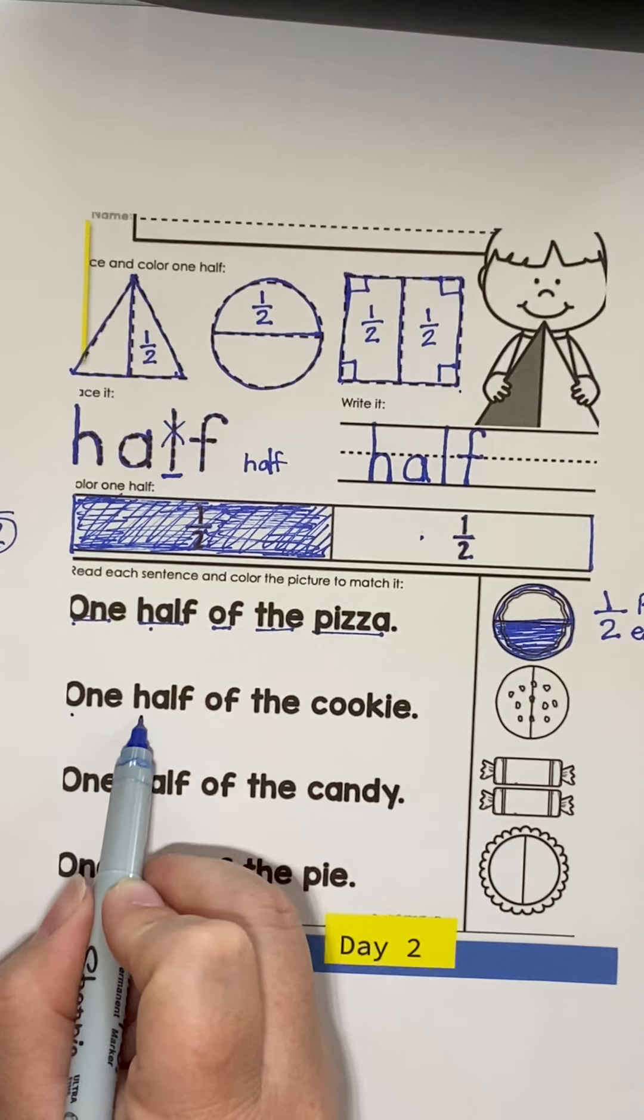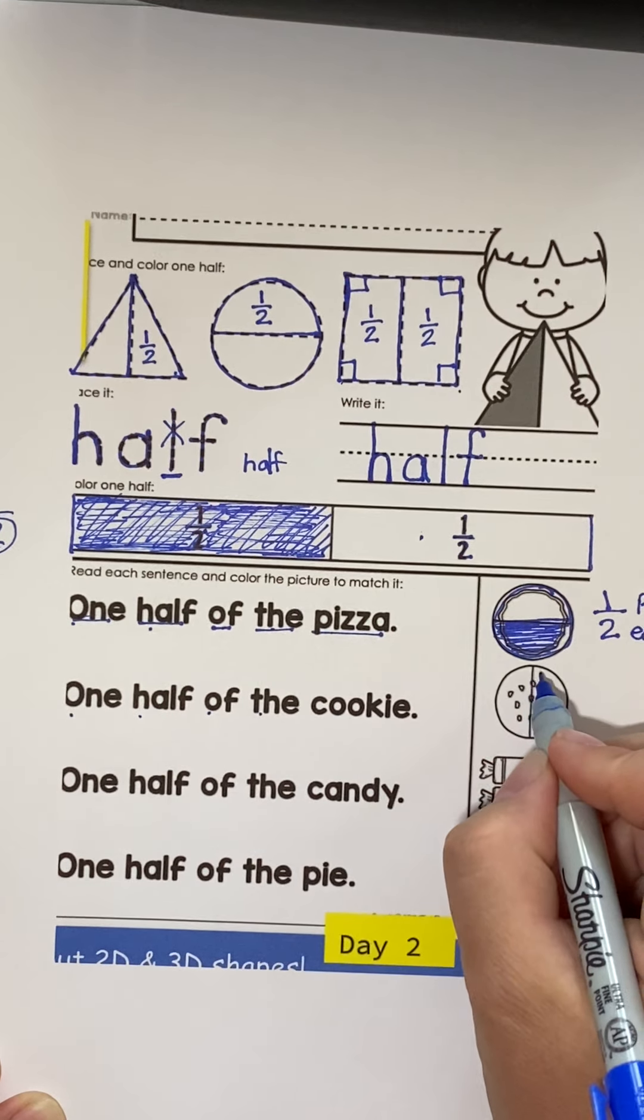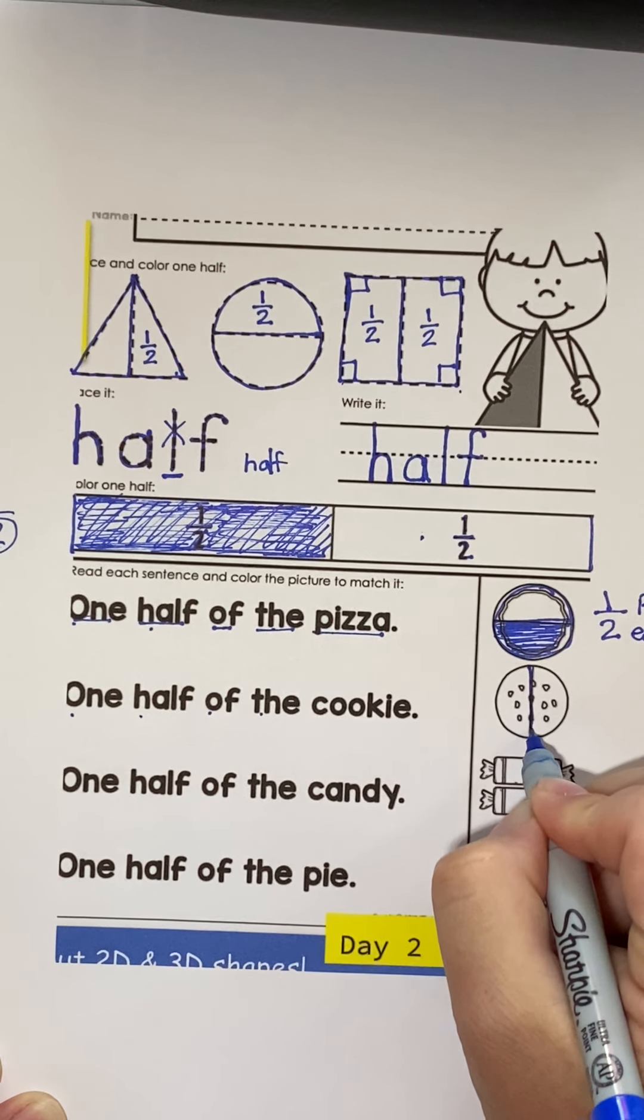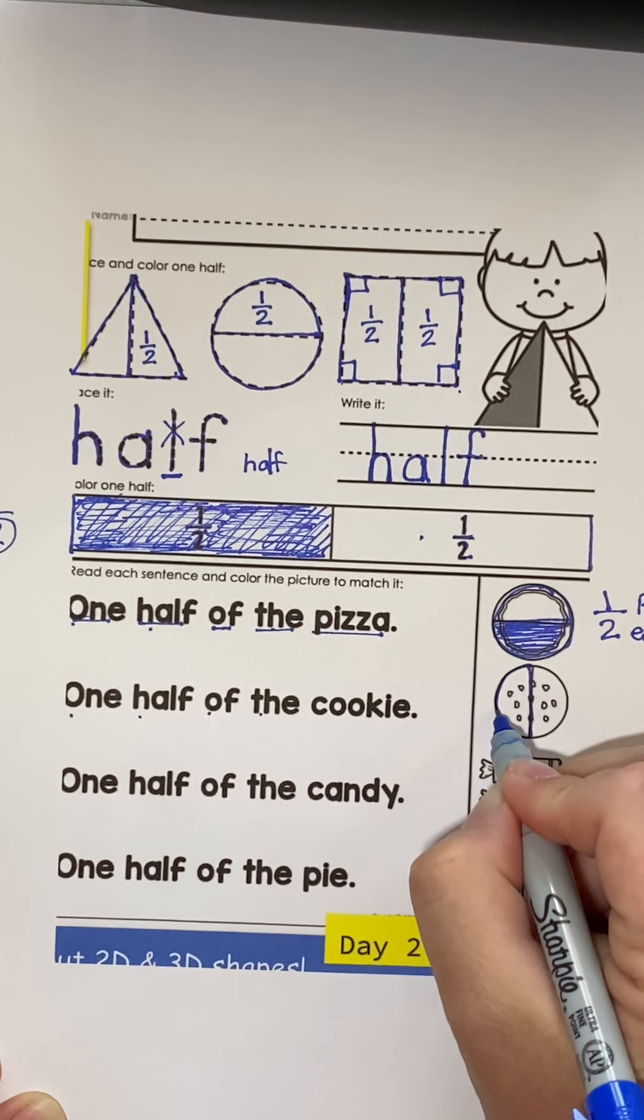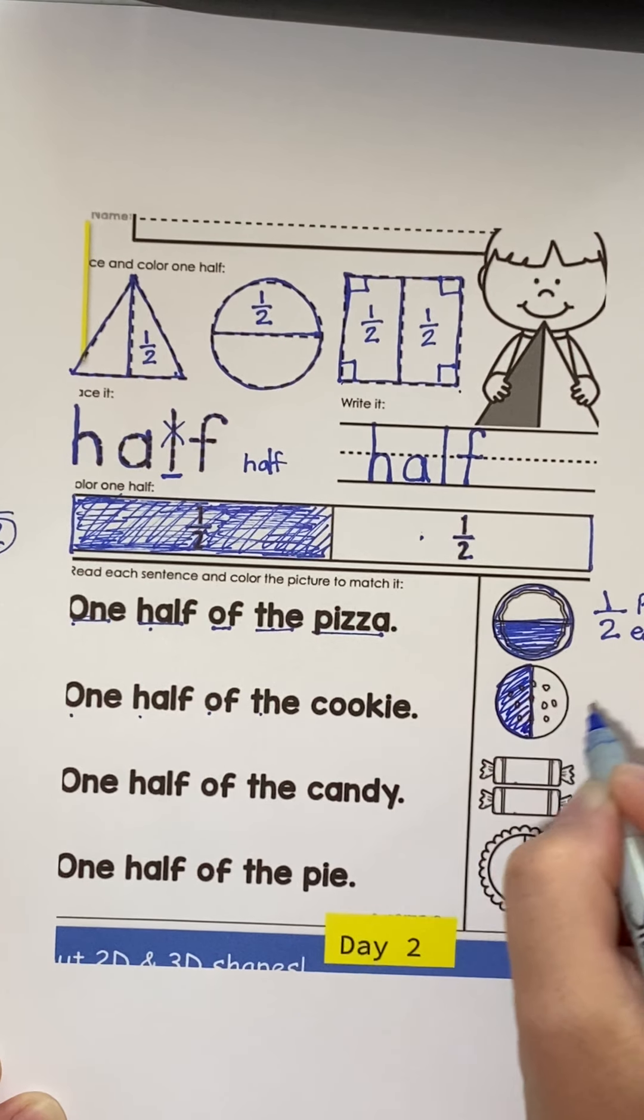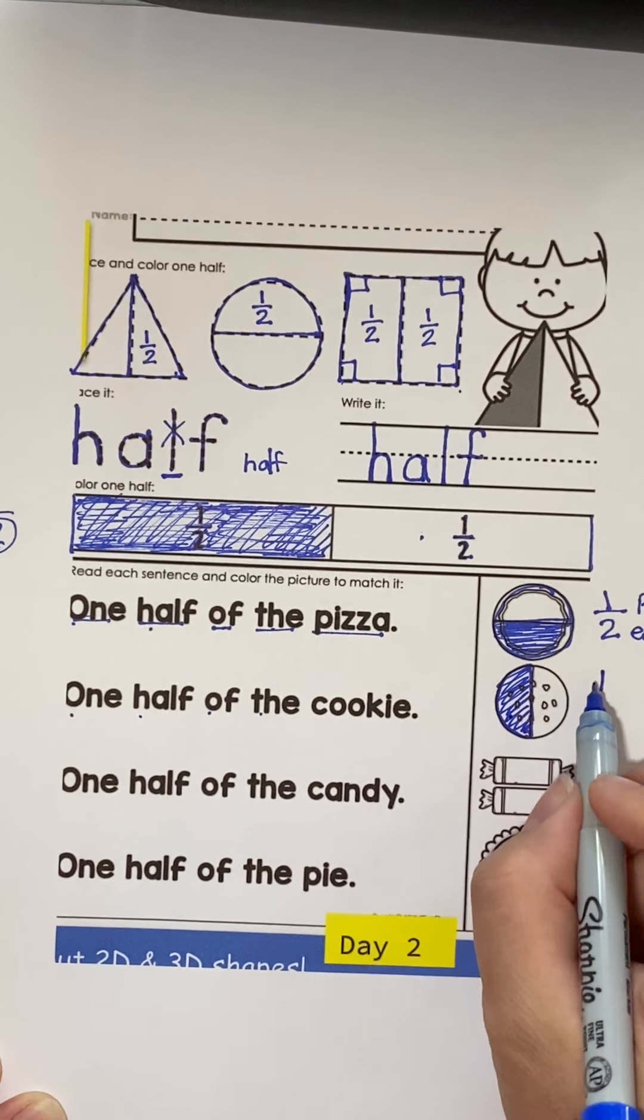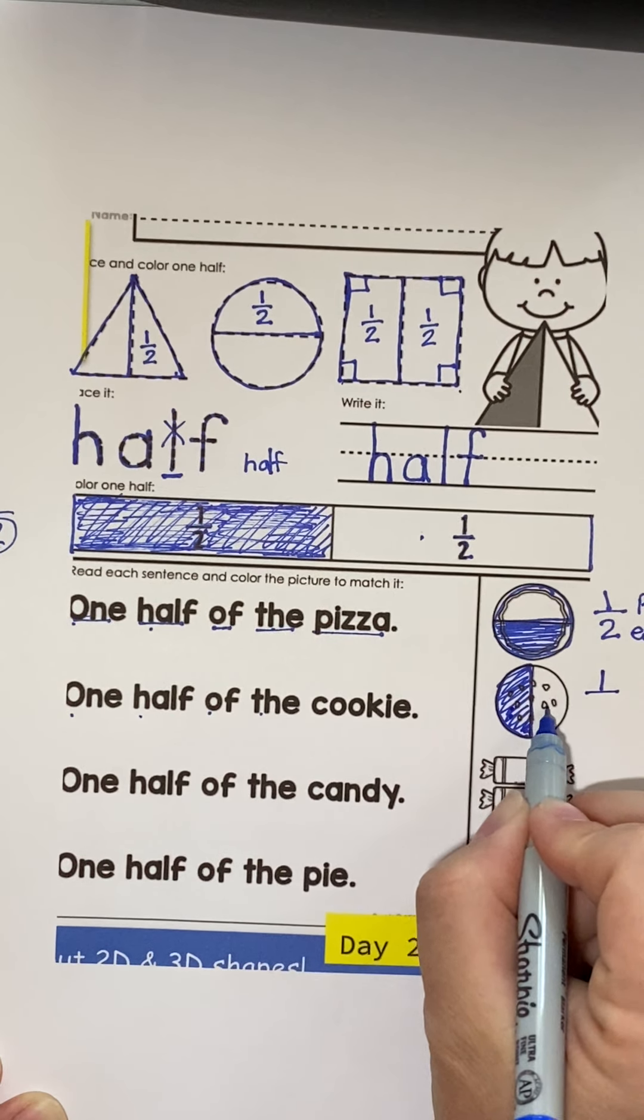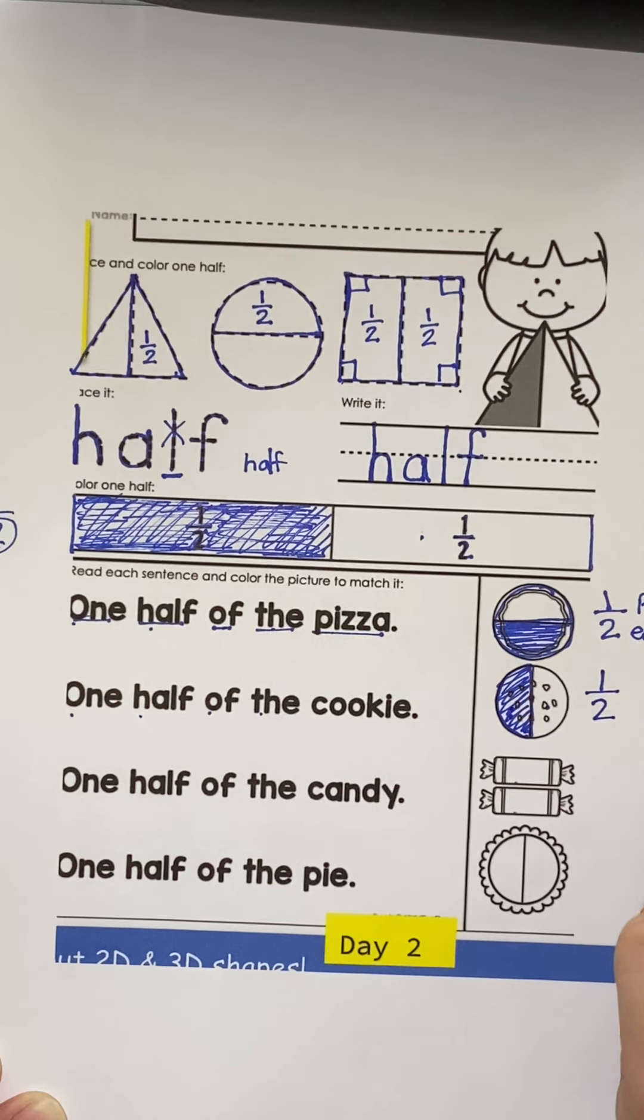Let's read the next one. One half of the cookie. So, if I'm going to color in one half of the cookie, does it matter which side I color in? Nope. Because I am coloring in one part out of one, two equal pieces.